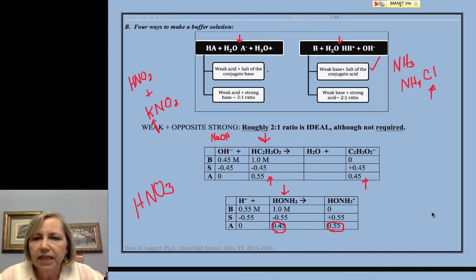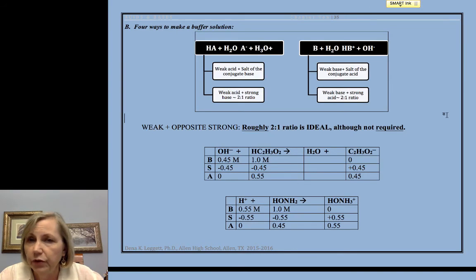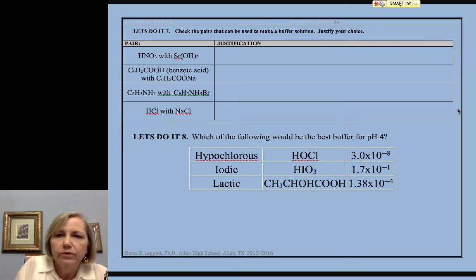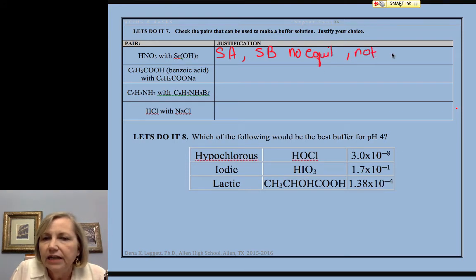So you need to be able to recognize some of these buffering systems and whether a combination of compounds will result in a buffering situation. So let's look at this little example here. I've got HNO3 with strontium hydroxide. That's a strong acid with a strong base. There's no equilibrium, so there's no buffer. Doesn't matter what combination that I have of these two, I'm not going to be able to make a buffer from those.